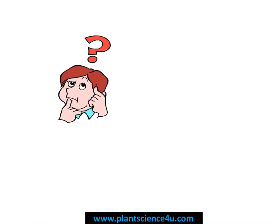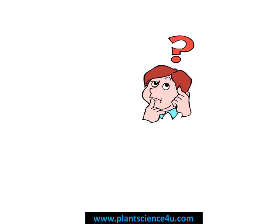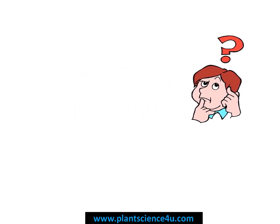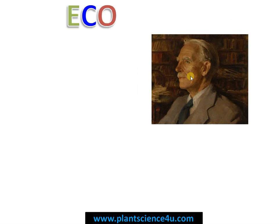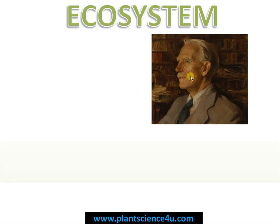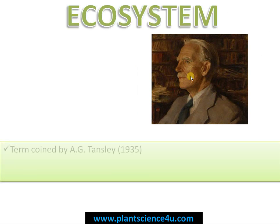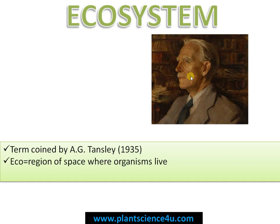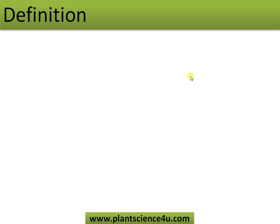Starting with the term ecosystem — the term was coined by A.G. Tansley, a British ecologist. The term 'eco' means the sphere or the region where organisms live, and 'system' is a result of interaction between many components.